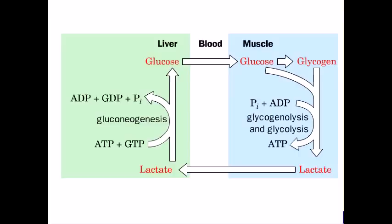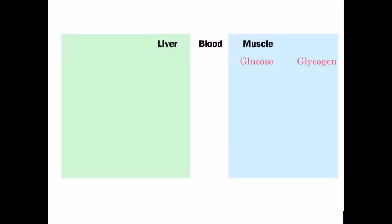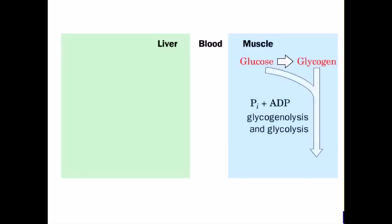Hello guys, in this video we'll be talking about the Cori cycle. Lactate is produced in the muscle when ATP demand exceeds the capacity of oxidative phosphorylation. Anaerobic production of ATP through glycolysis or glycogenolysis generates the end product lactate.